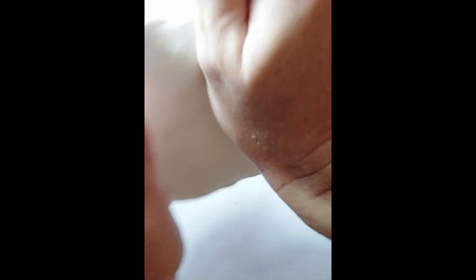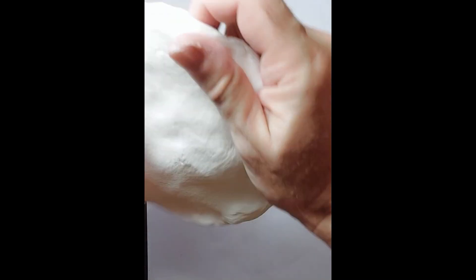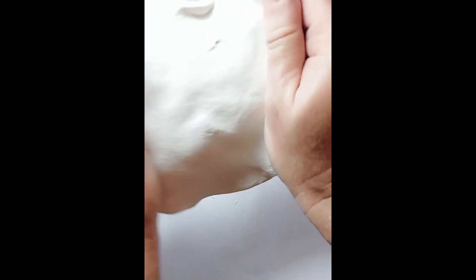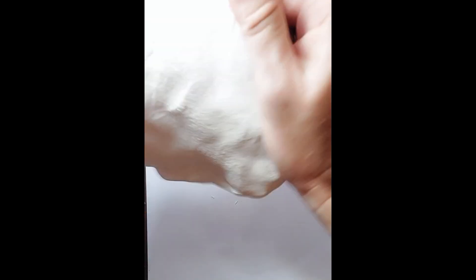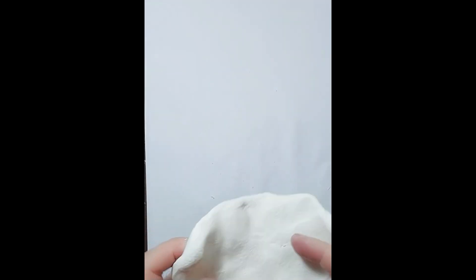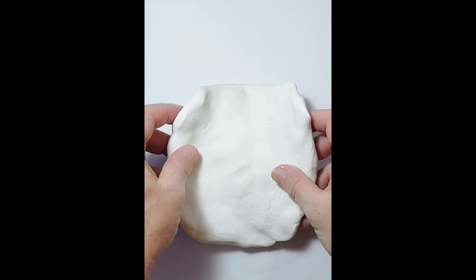Okay, so we need to make it more like rectangular, I think is the word. Yeah, rectangular and square sort of shape. So what I will do next is just pop that on there and now I'm going to roll it.